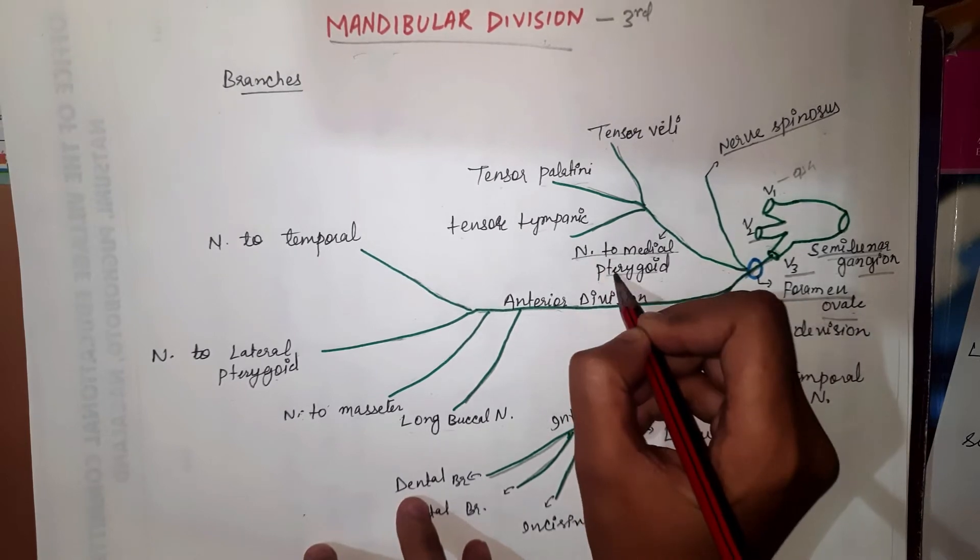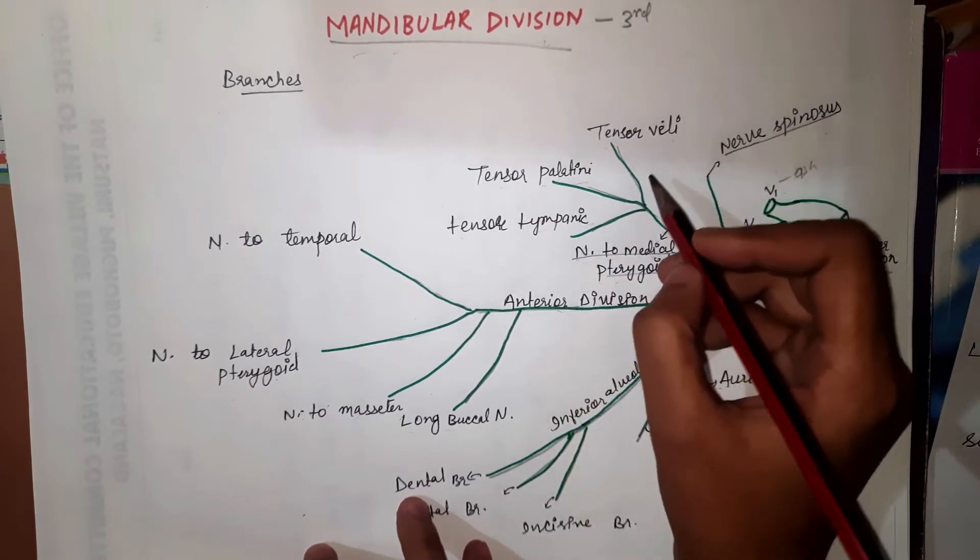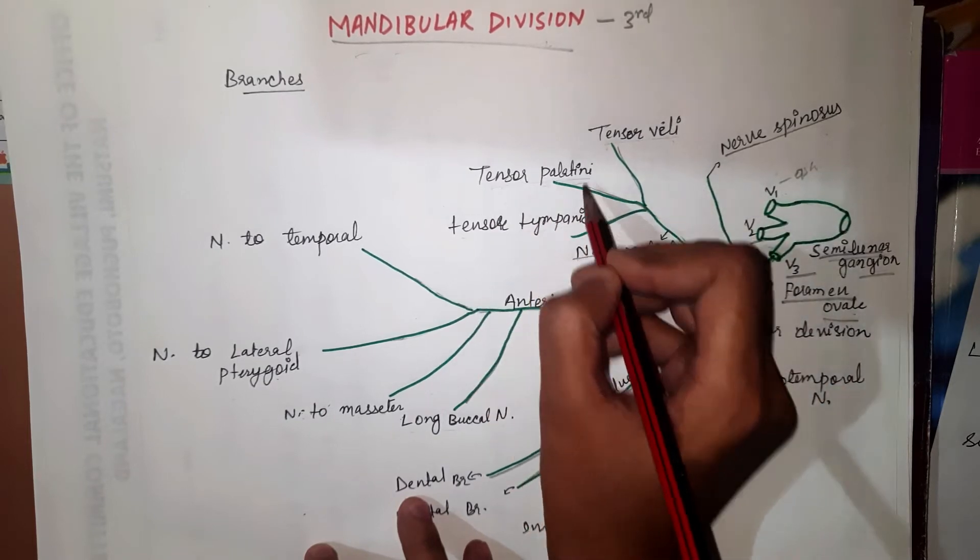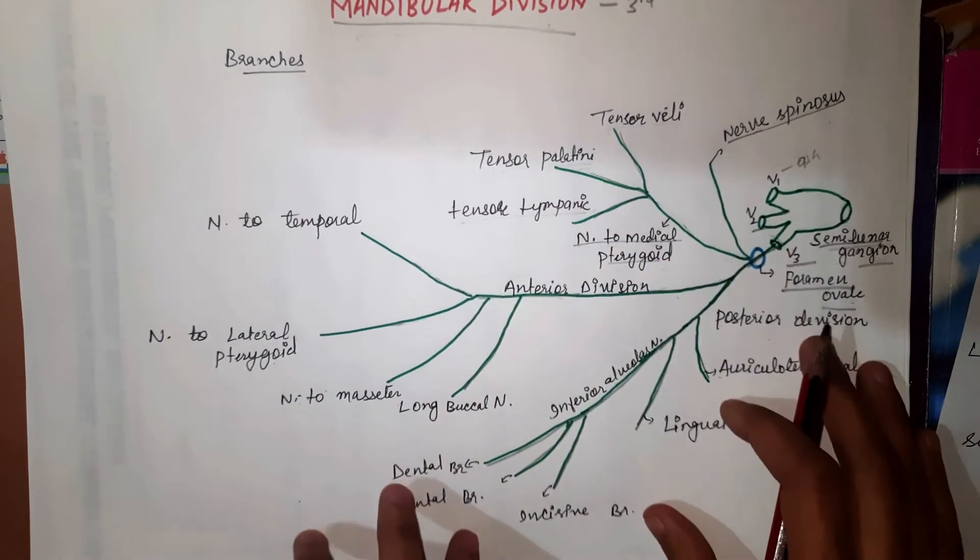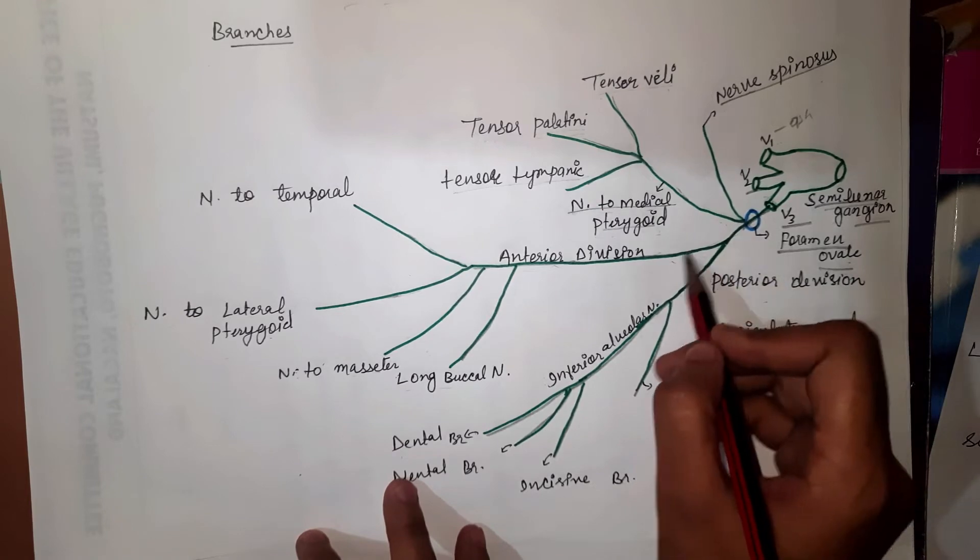Nerve to medial pterygoid supplies three muscles: tensor veli palatini, tensor tympani, and then it's divided into anterior division and posterior division.